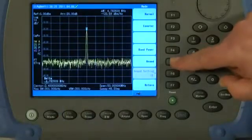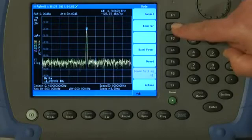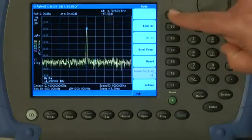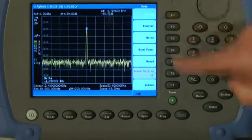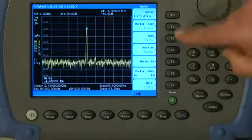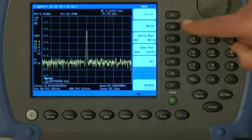You will also see there are other Marker functions for things like band power and demodulation. One I like very much is the Counter Marker. If I just go back to Normal first of all, and if I just press the Mode from Delta back to Normal.